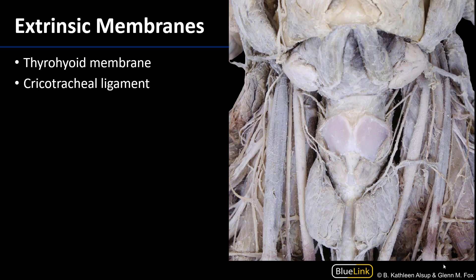Let's first look at those extrinsic membranes. The hyoid cartilage is approximately there, and extending between the hyoid cartilage and the thyroid cartilage — which effectively suspends the larynx — is the thyrohyoid membrane.